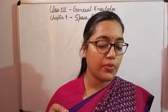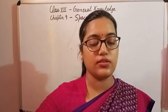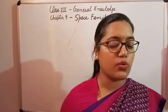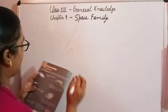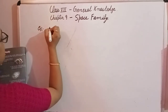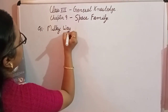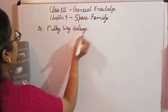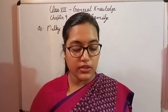The first heavenly body: it is a group of billions of stars of which our own sun is a member. That is the Milky Way Galaxy. So the Milky Way Galaxy is the group of billions of stars of which our own sun is a member.